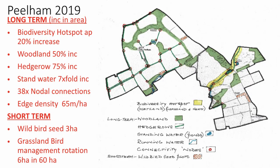Edge density — and this is connecting edge — has increased by 65 metres per hectare, because fragmentation increases edge length as you have greater edge to volume of habitats that are fragmented. But these are really meaningful edges, so it's edges that connect. Those are long-term improvements. Short-term habitat enrichment includes wild bird seed — all SRDB funded, incidentally — and grassland management: we're looking at something like six hectares of grassland management rotation in a 60-hectare area.